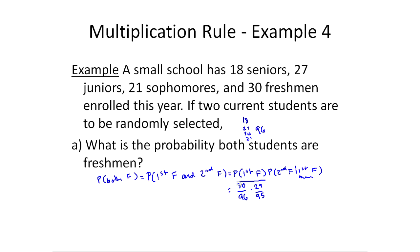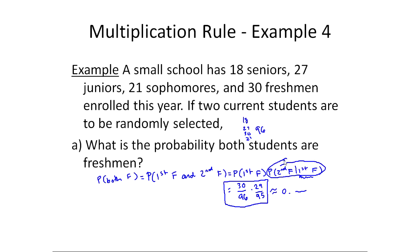So this product — 30/96 times 29/95 — is our answer. As with any probability question, it's expected that you convert this to a decimal, percentage, or at least a simplified fraction. I'm leaving it like this so you can see where the numbers came from, but of course you would say this approximately equals 0-point-whatever that comes out to be. Notice the multiplication rule gives an 'and' probability, and I end up with a conditional — I have to think it through since I don't have a table of numbers in front of me.